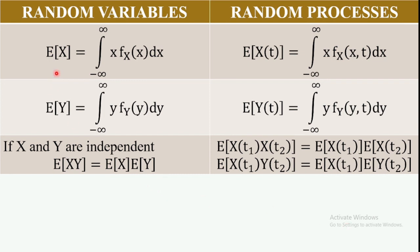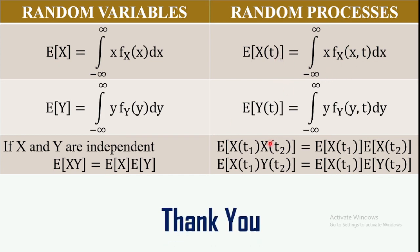X is the random variable in the random variable case, for a single case. That random variable varies with respect to time; at time instant t1, X(t) is the random process. Thank you for watching.